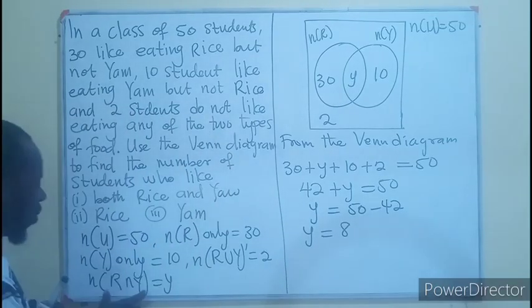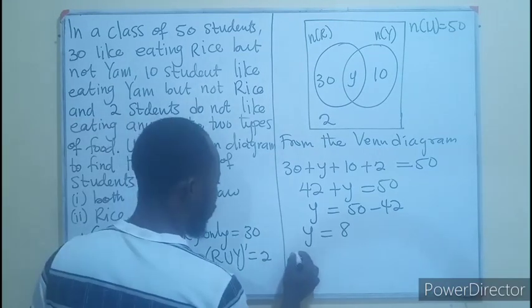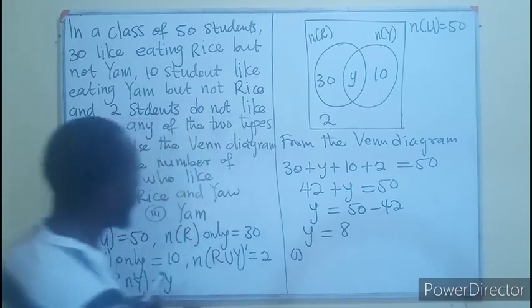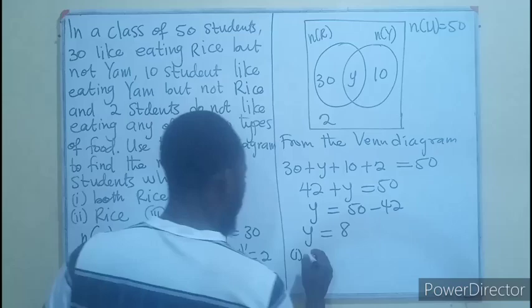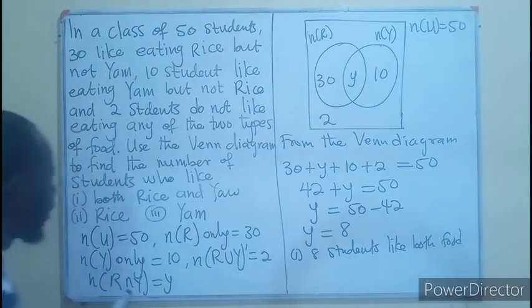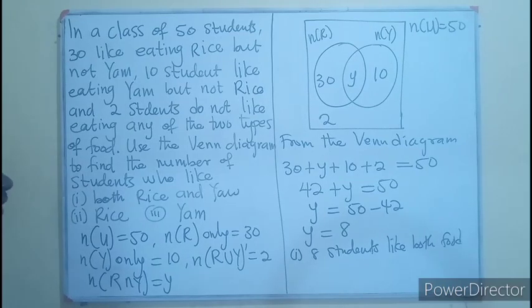In this case, we are the one indicating that the intersection is Y. So, therefore, we are looking for the first question. Those who like both. So, we can say that 8 students like both yam and rice. That is the first thing.